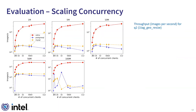First, we evaluate the throughput in images per second for Query 2, which retrieves resized versions of images with one tag and a particular geolocation, as the number of concurrent clients increases. The throughput of VDMS, represented by the red line, continues to increase up to 56 concurrent clients, which is the hardware concurrency of the system. VDMS outperforms both baselines for all databases for this query by a large margin.